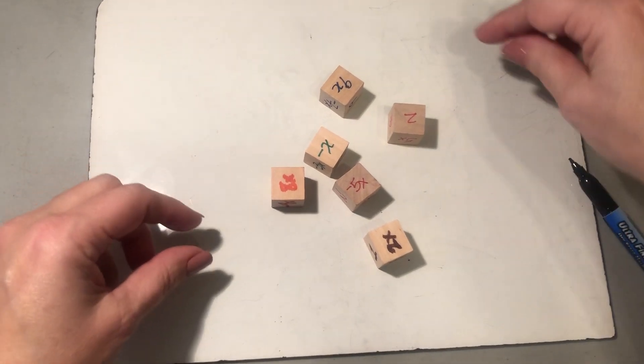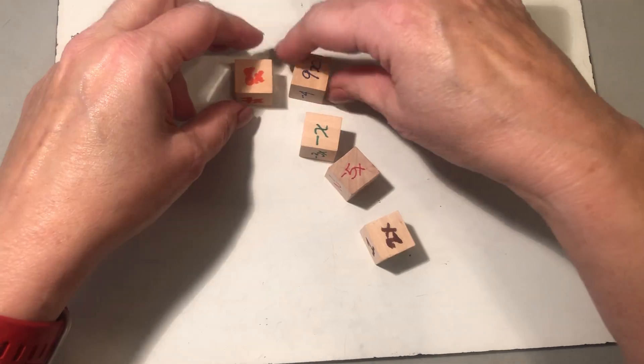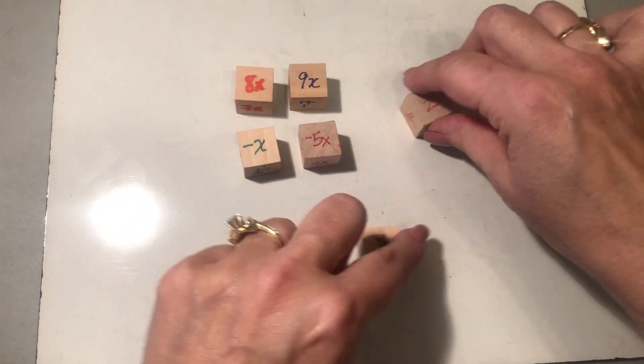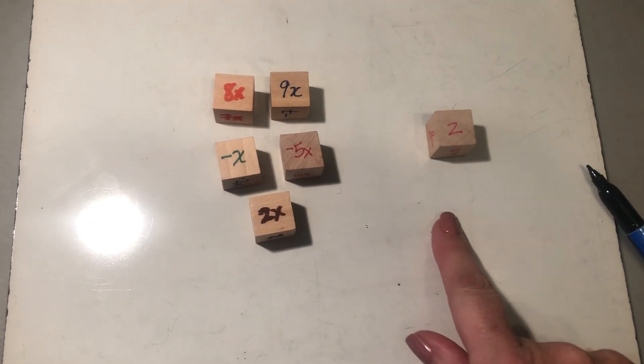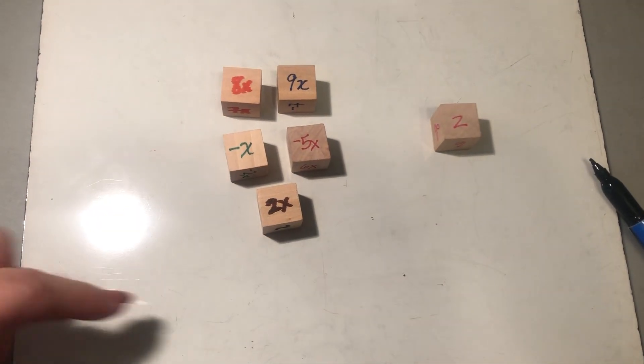I'm going to roll again. Let me sort. Look at all the x terms. This is easy, this is positive too. What does all of this work out to be?